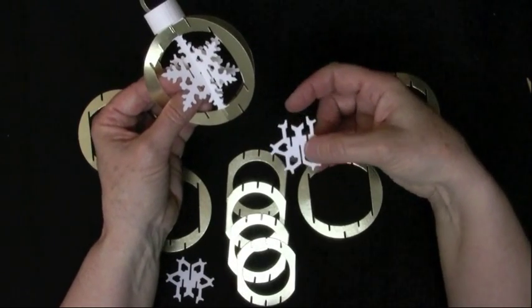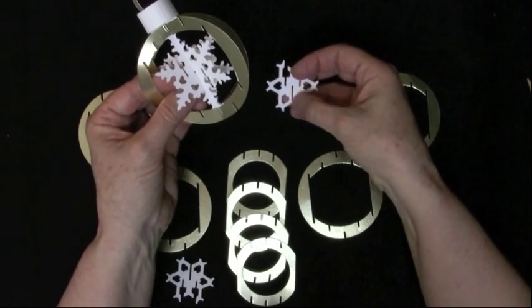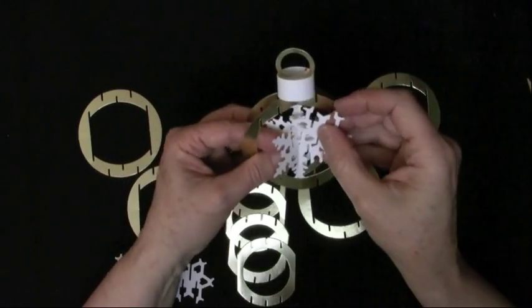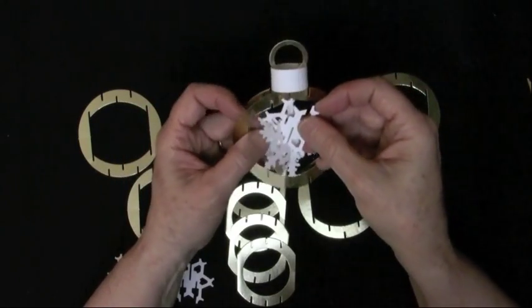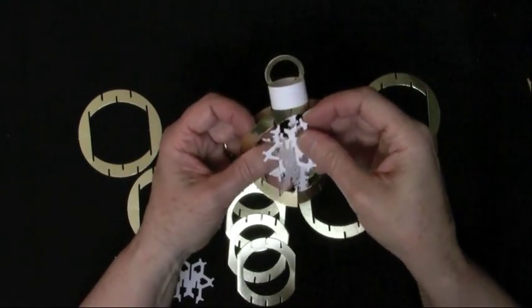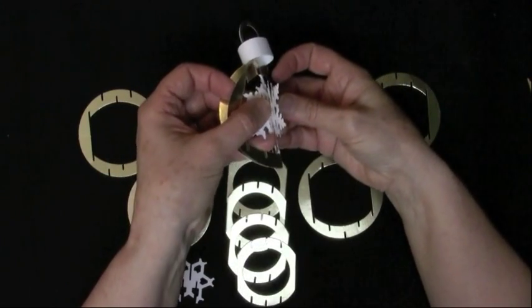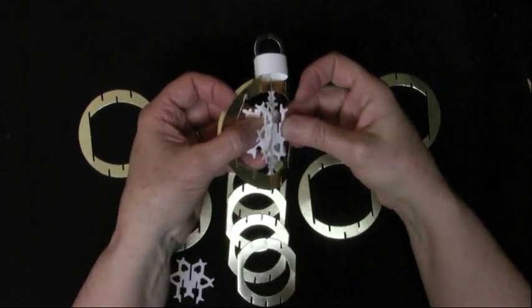So this time I'm going to take my snowflake and turn it so that the middle slot is on the bottom and I'm just going to slide this down. As I do this I'm going to slide it in front of my thumb so it doesn't tangle with the other piece.